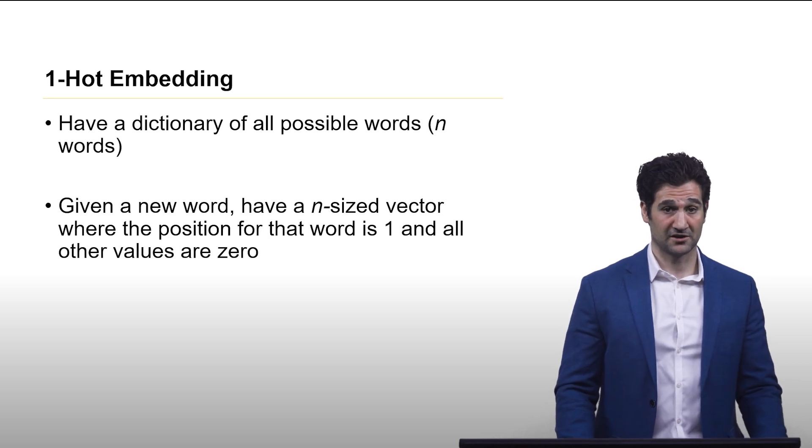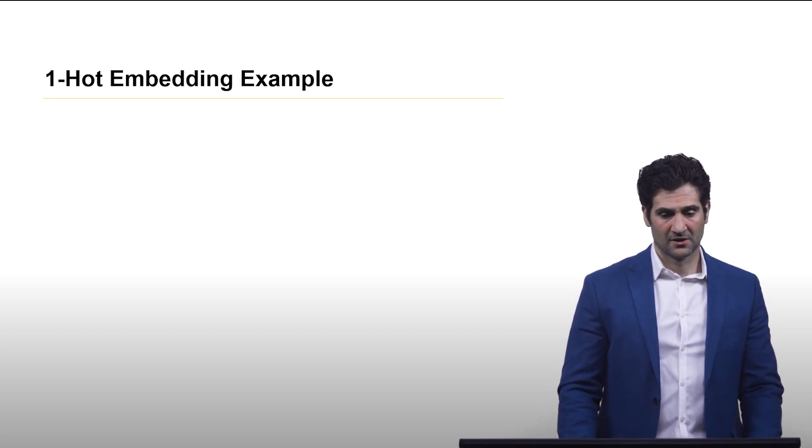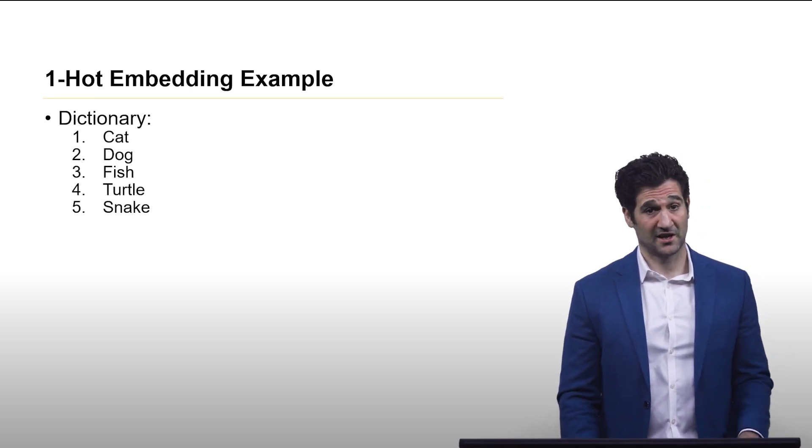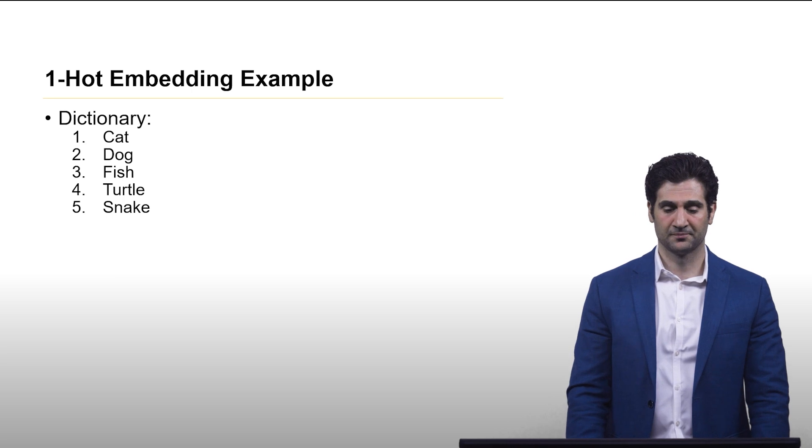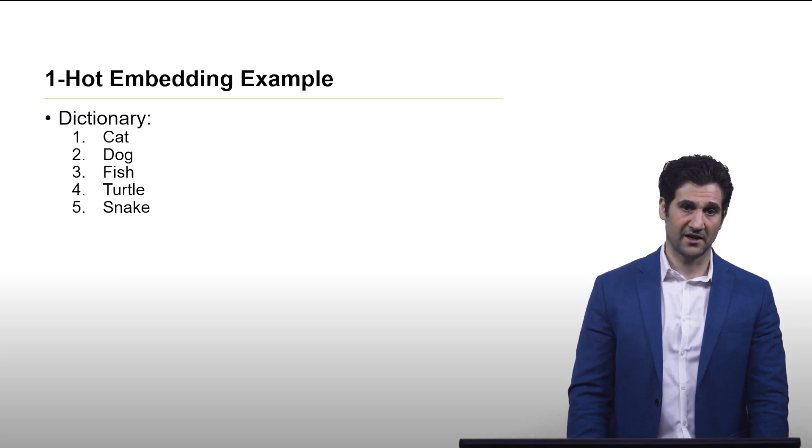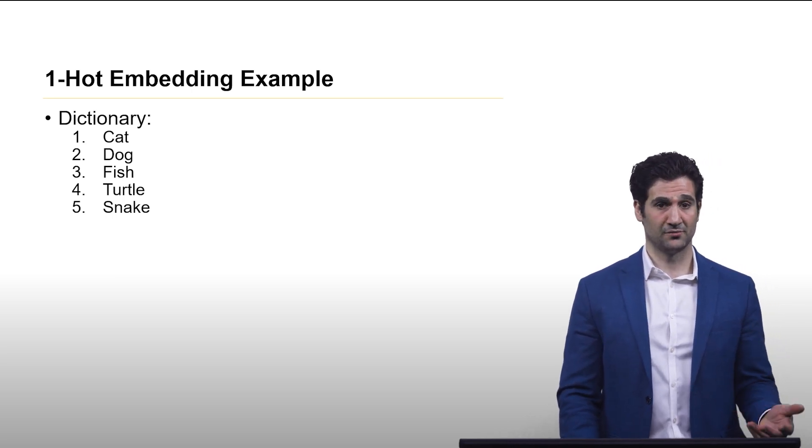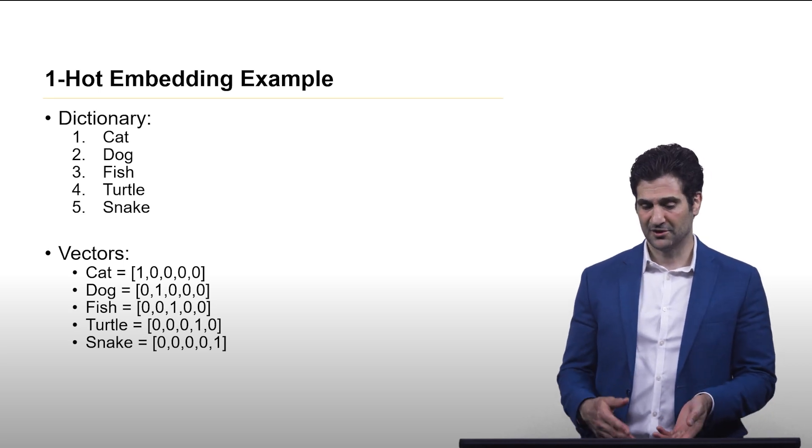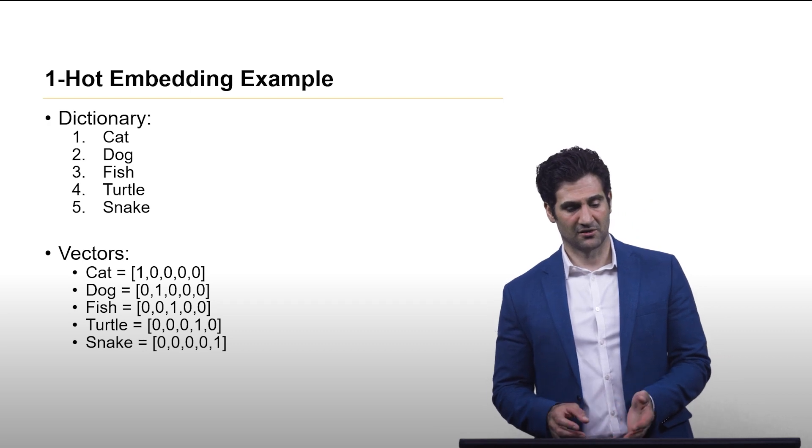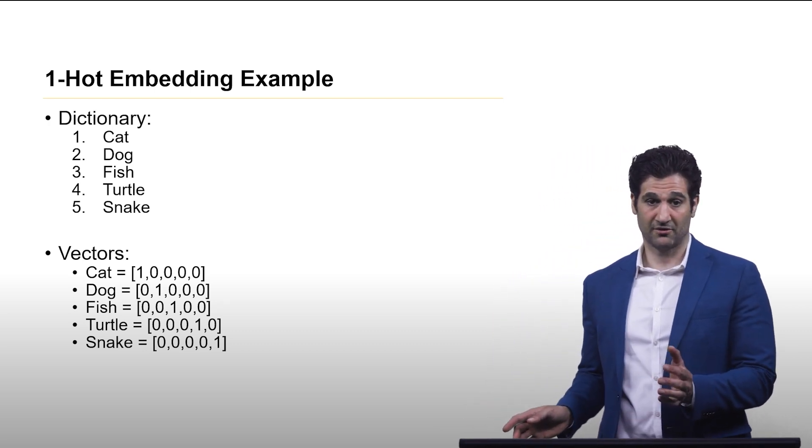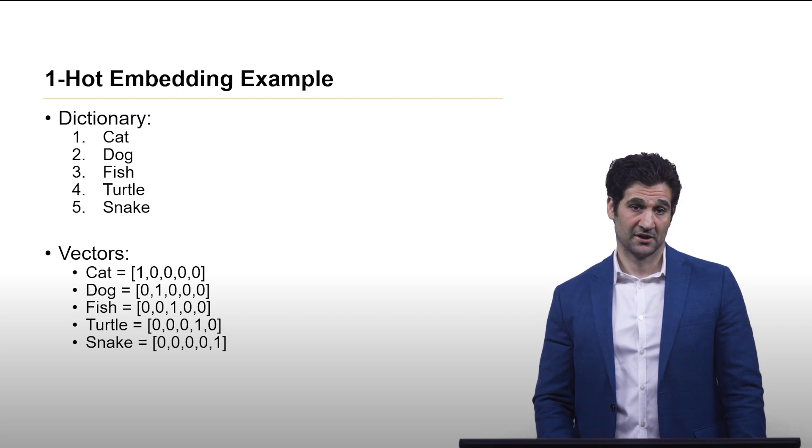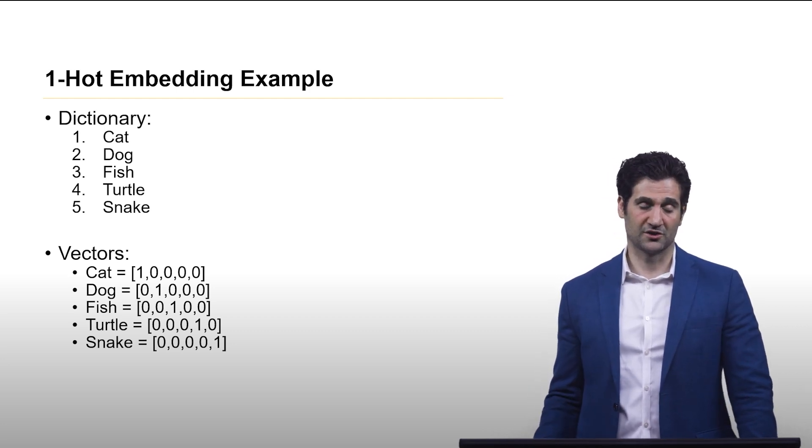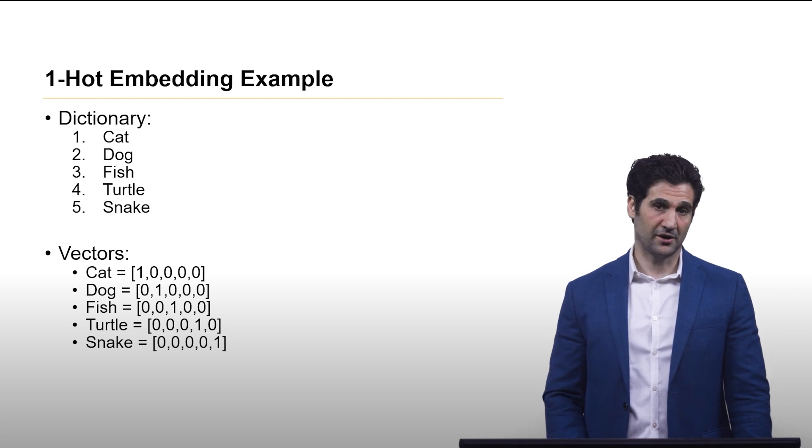So let's take a look at an example. Let's say this is our dictionary with a couple of different pet types: cat, dog, fish, turtle, and snake. That's five words in the dictionary, so these will be vectors of size five. And here's what the vectors look like. The one is just in a different location for each of the different words. And that's how you transform the words into vectors using a one-hot embedding.